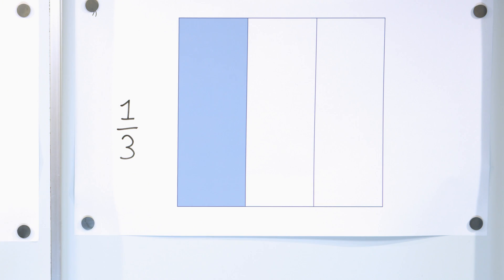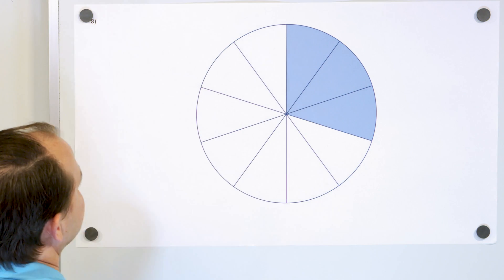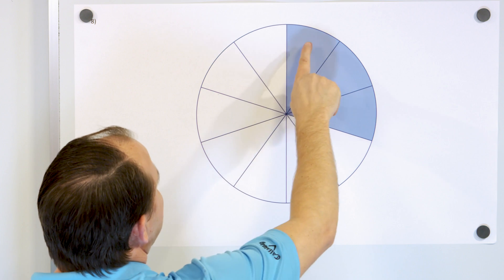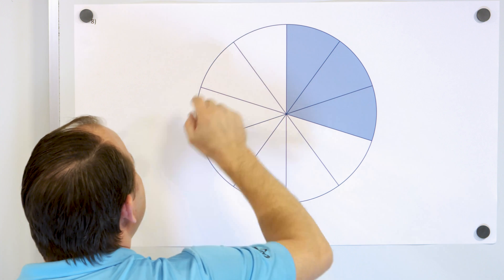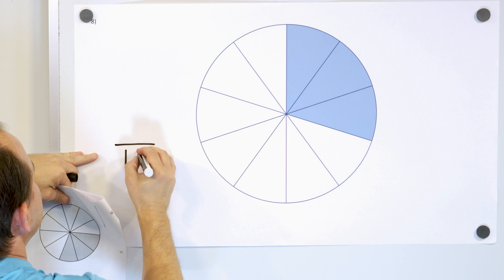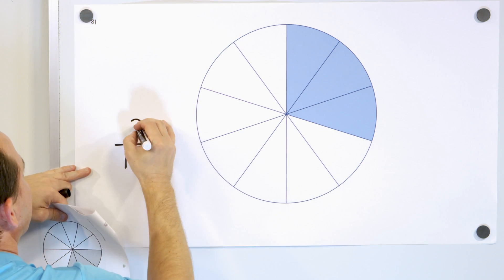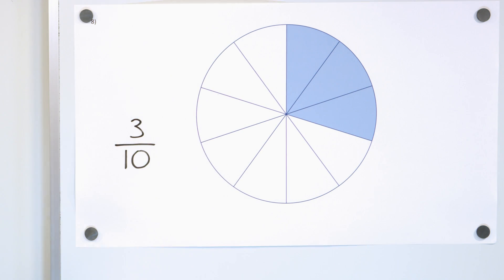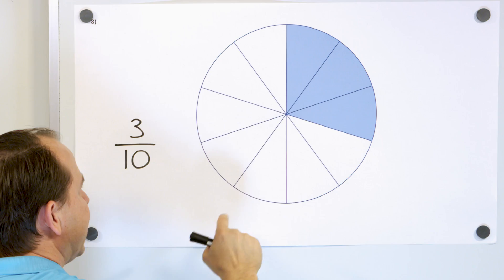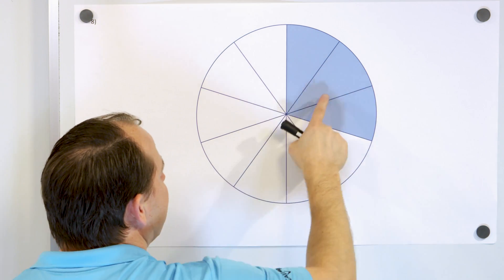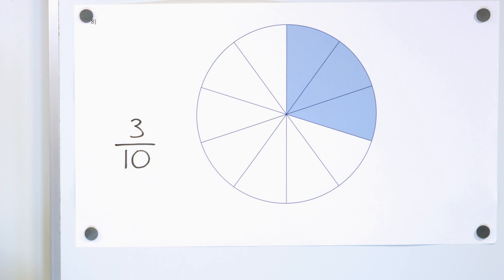Let's tackle our last three problems. Here we have a fraction — the shaded region. What is that fraction? How many pieces do we have? One, two, three, four, five, six, seven, eight, nine, ten equal pieces — so we've cut this into ten equal pieces. How many pieces do we have? One, two, three — so here we have three out of ten pieces, called three tenths. This slice is one out of ten, one tenth; this is two out of ten, two tenths; this is three out of ten or three tenths. Altogether, this fraction is three tenths of the whole.